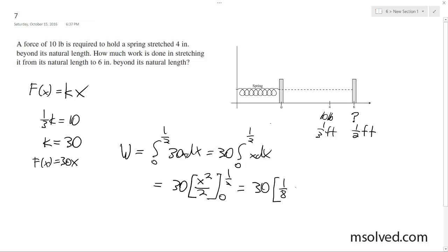And then zero is just zero foot pounds, and then the amount of work done we get is fifteen over four foot pounds. Okay, and that's it.